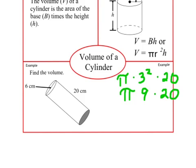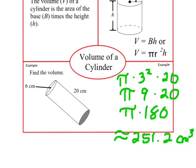Squaring my 3, I get 9. And then I multiply that by 20 to get 180. And, my final step is to multiply that by pi. And so, my final volume is approximately 251.2 centimeters cubed. Again, we're dealing with volume here, so our answer does need to be cubed. If you don't cube it on your quiz or test, I will take points off.